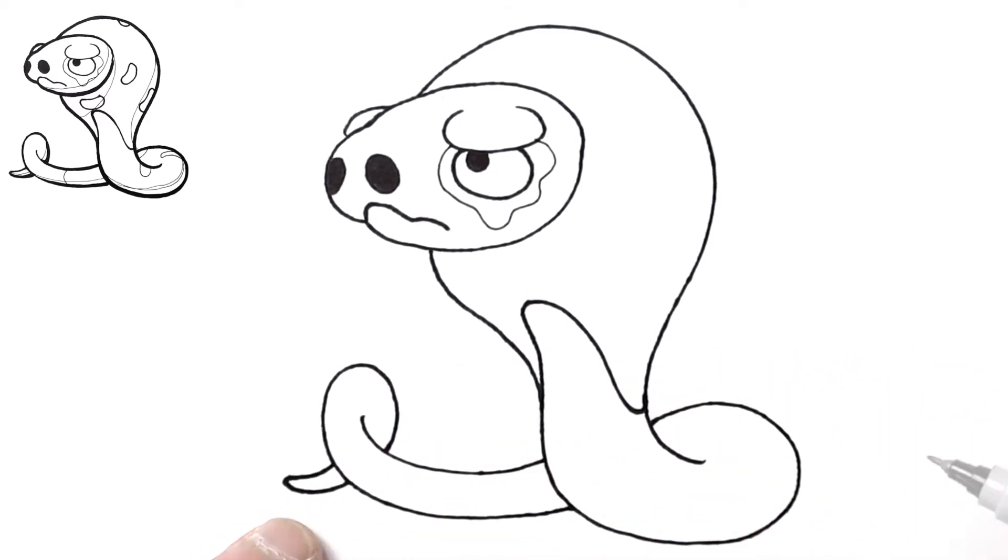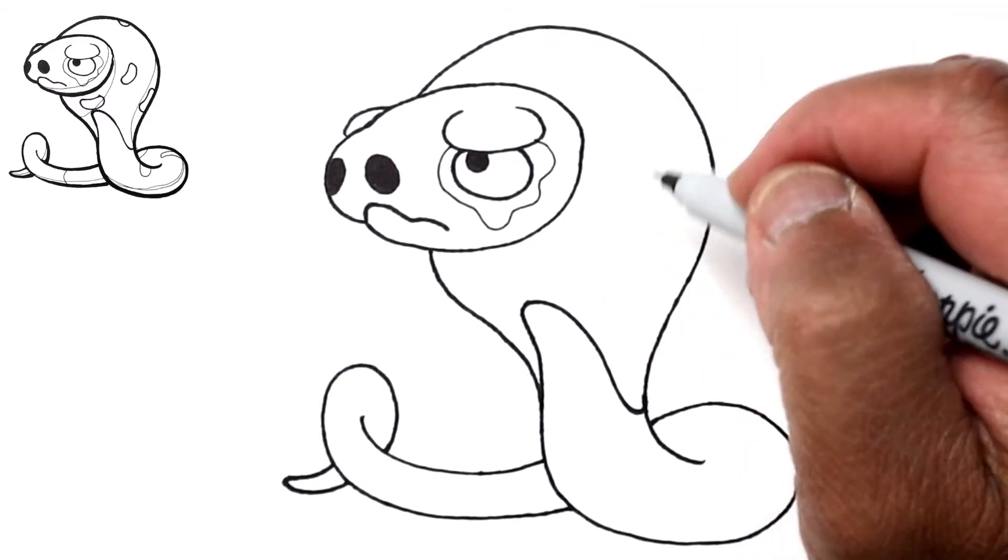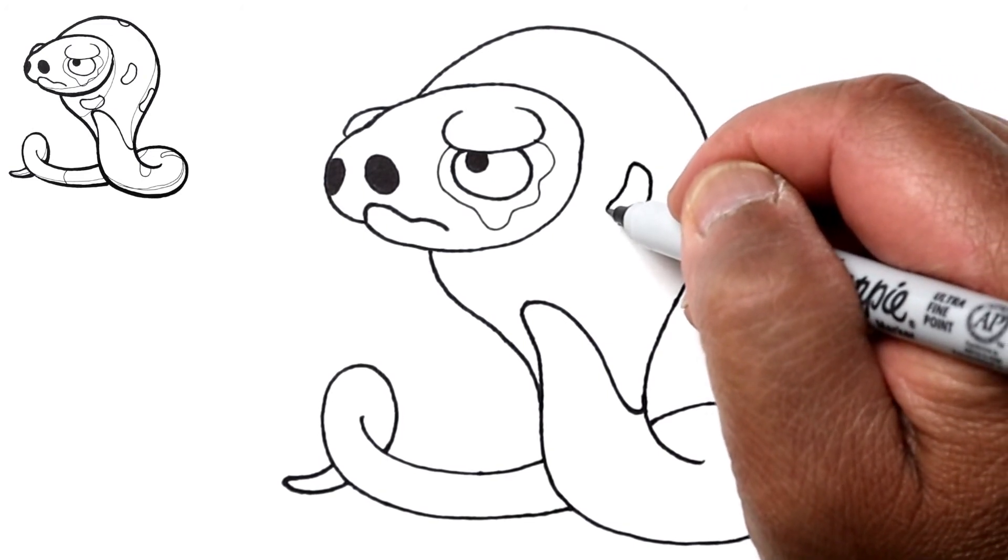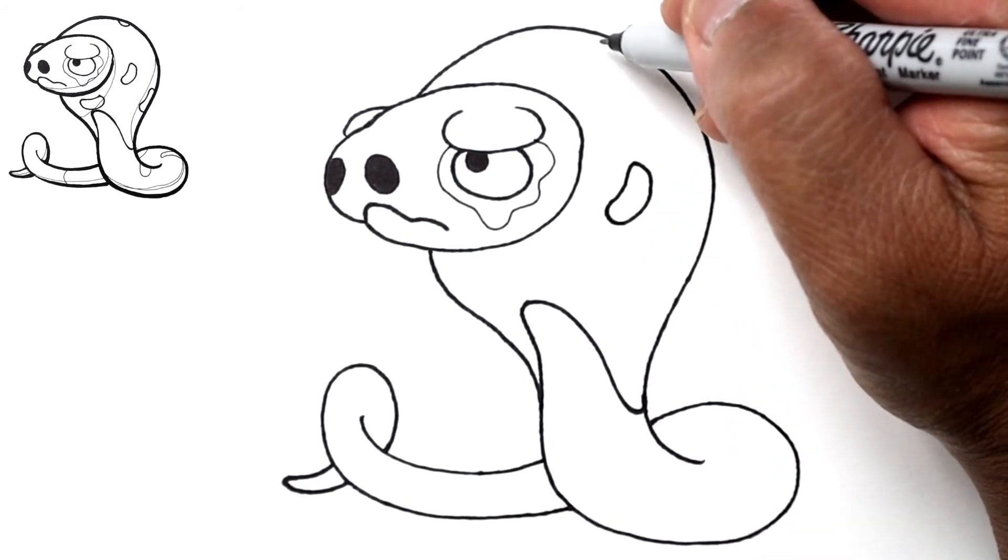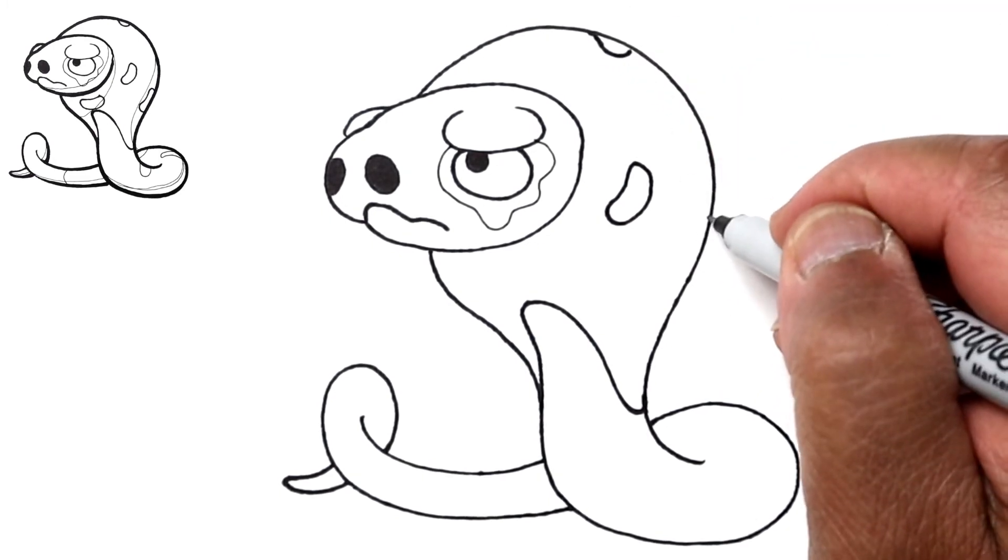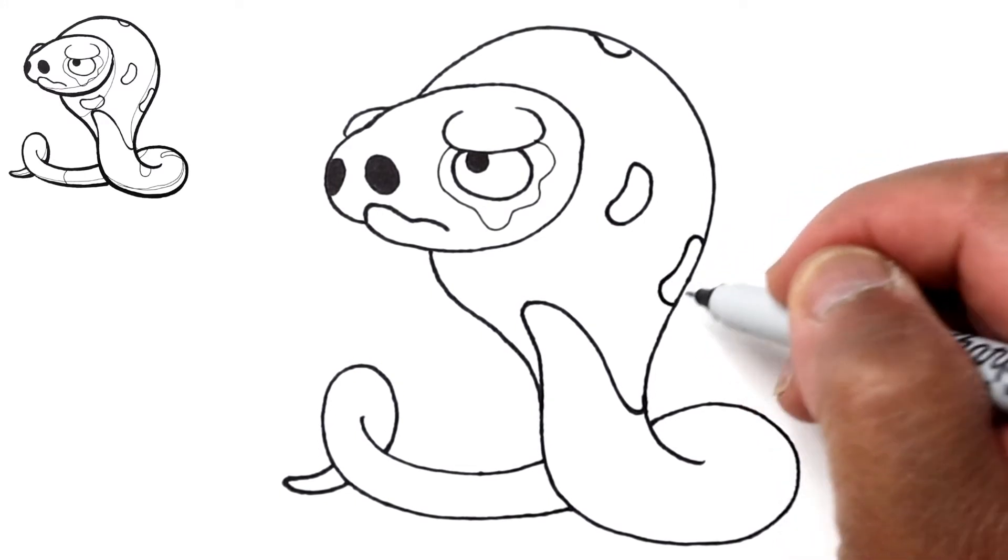Next we're gonna draw some of these dark spots that are around the neck area. Just peanut shape curves. There'll be one here that you can't see the whole shape, and one down here, again peanut shaped, and one right here under the head.